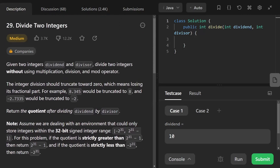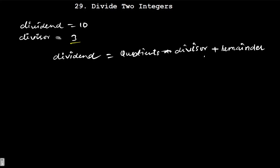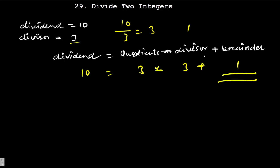How can we solve this without using multiplication, division, and modulo operators? Let's go to the whiteboard and solve this first, then write the code. In the first example, dividend is 10 and divisor is 3. Dividing gives quotient 3 and remainder 1, satisfying: dividend = quotient × divisor + remainder. We are given dividend and divisor and need to find the quotient.